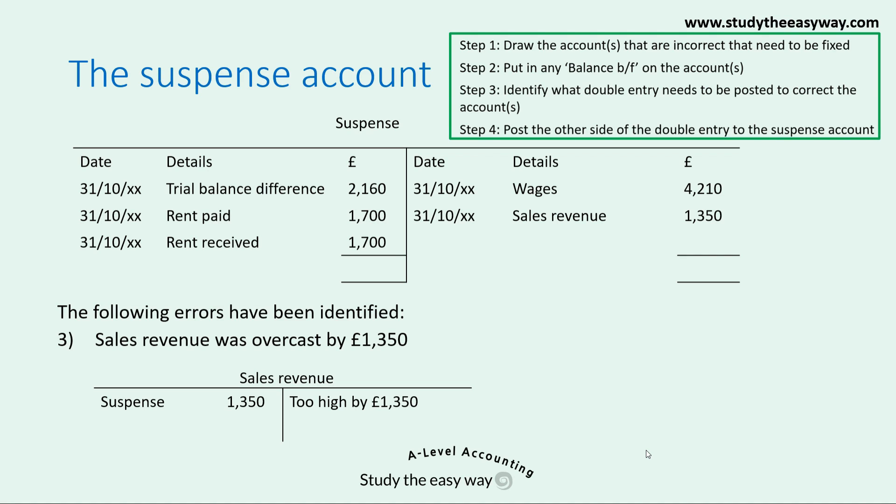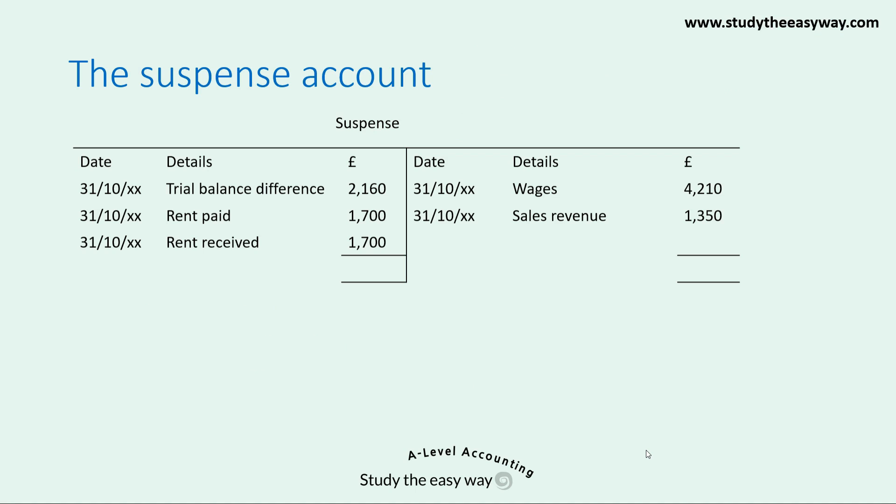Now we have posted everything needed to the suspense account. The final step is to balance the suspense account by adding up the figures in the debit column and writing in the total, and adding up the figures in the credit column and writing down the total. When you do that, you see that the two totals are in fact the same — there is no balance carried forward or brought forward on this account. The account balances exactly, and that completes this example of the suspense account.